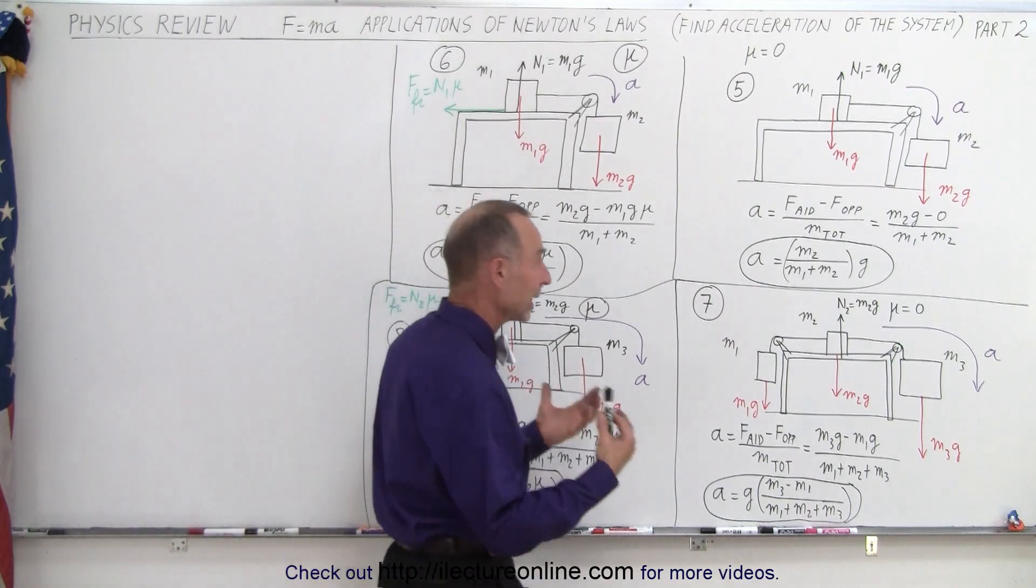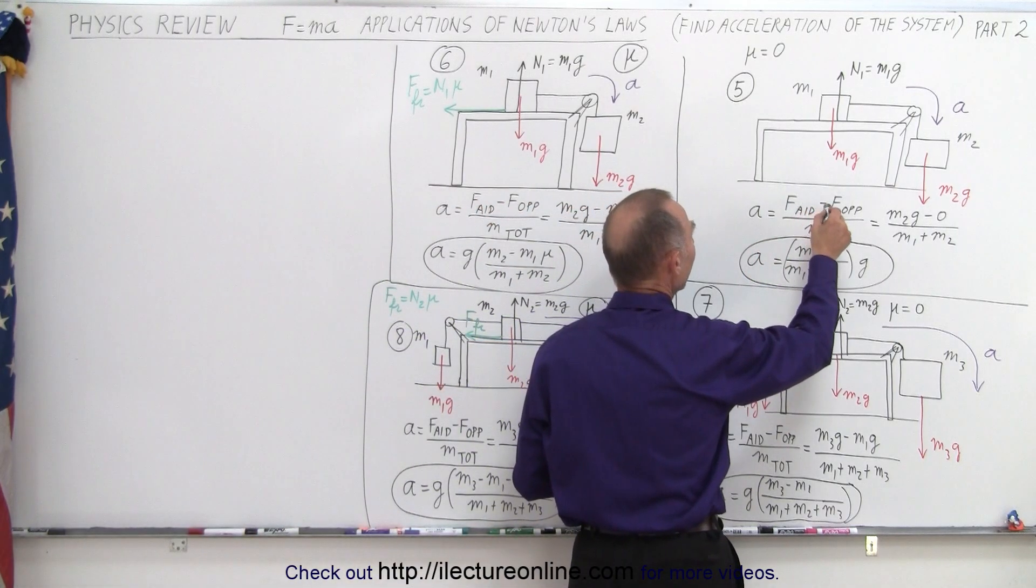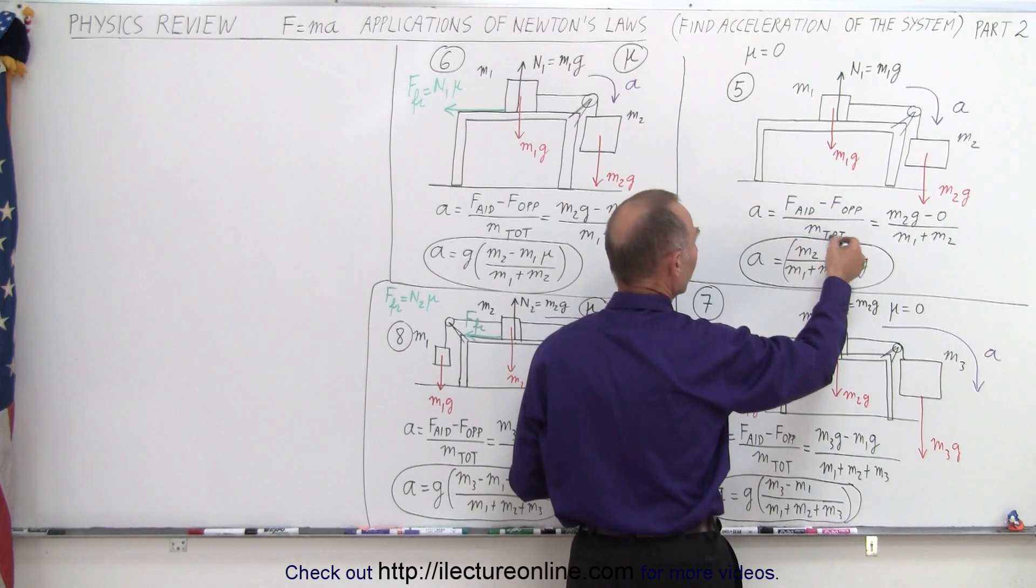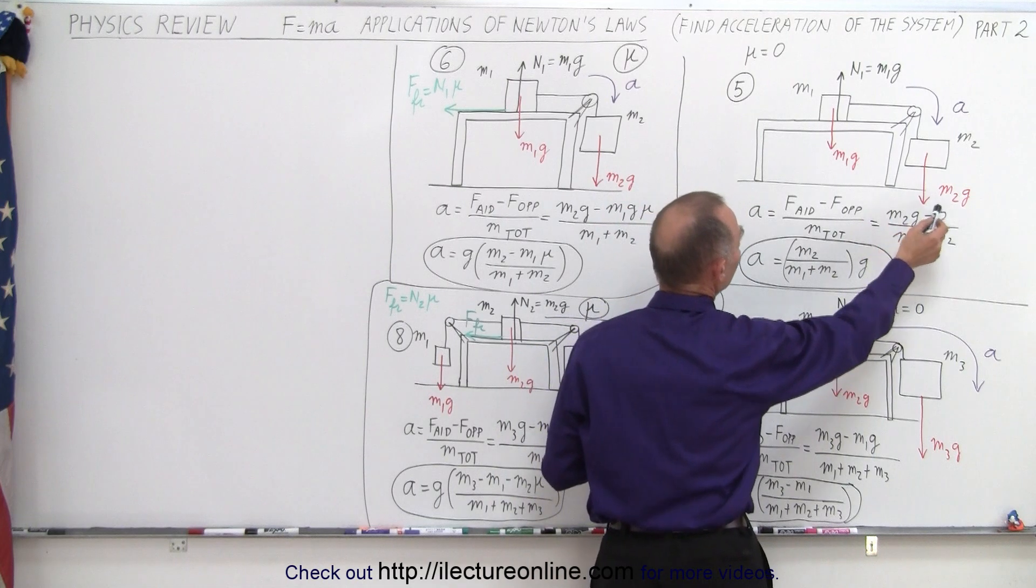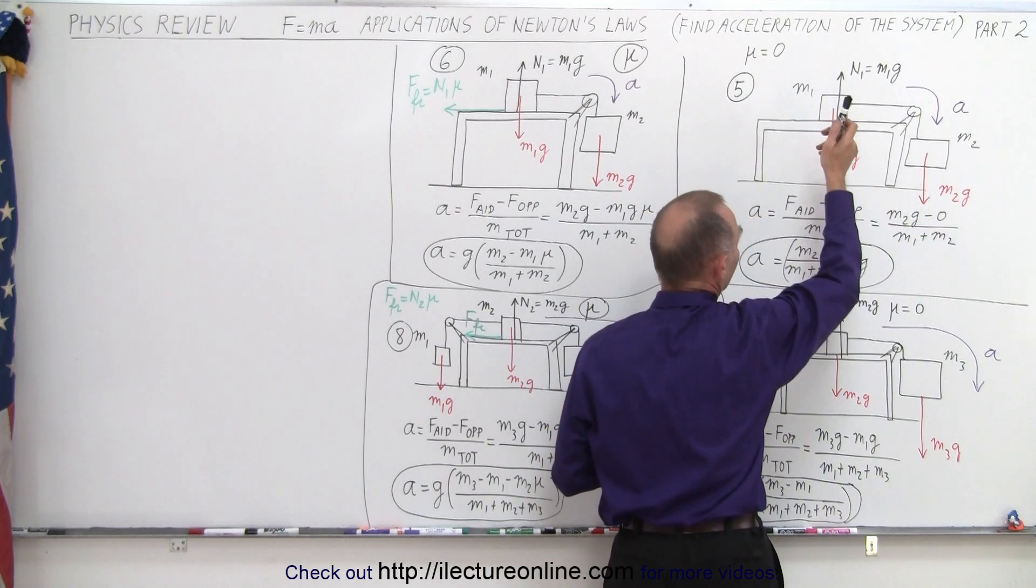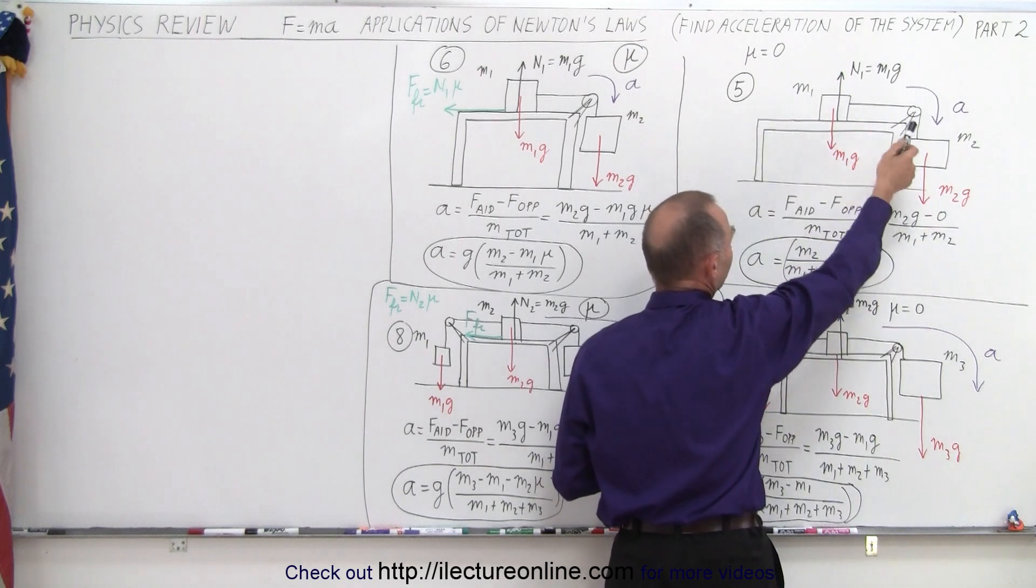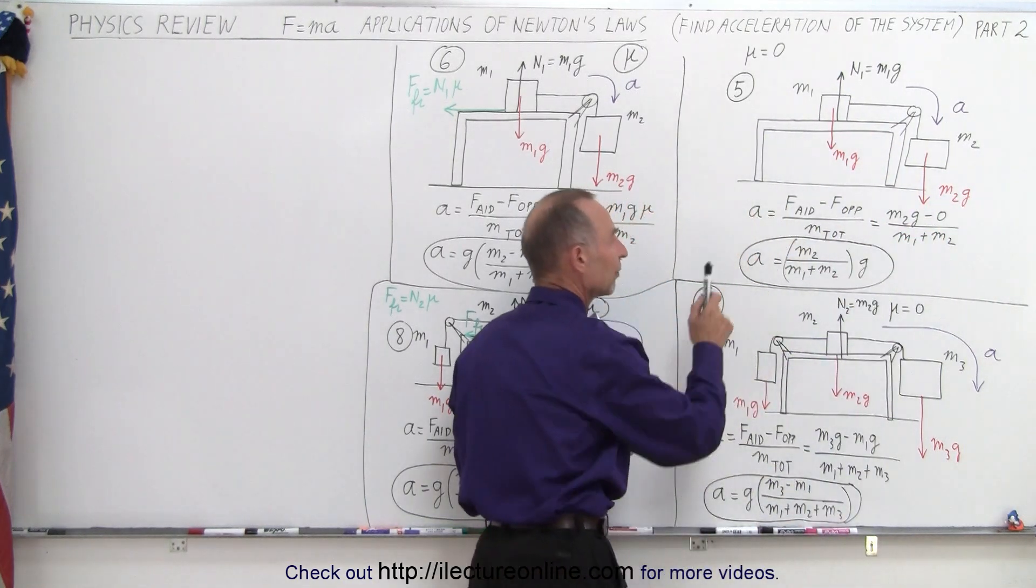So, how do we work out the problem? Again, we say that the acceleration is equal to the aiding forces minus the opposing forces divided by the total mass of the system. In this example, the aiding force is simply M2g. There's no opposing forces. The two forces cancel each other out. There's no other forces in the opposite direction of the acceleration, so that's zero. And we divide by the total mass to give us the acceleration.